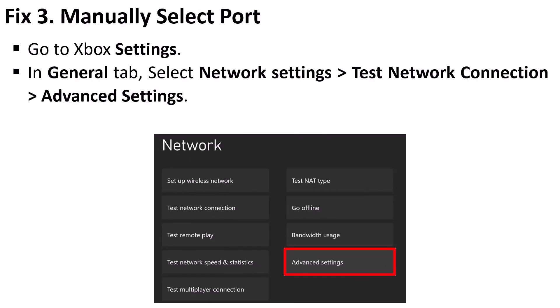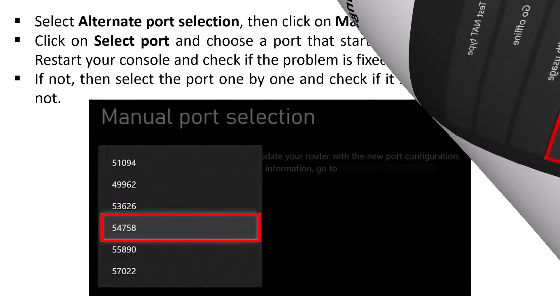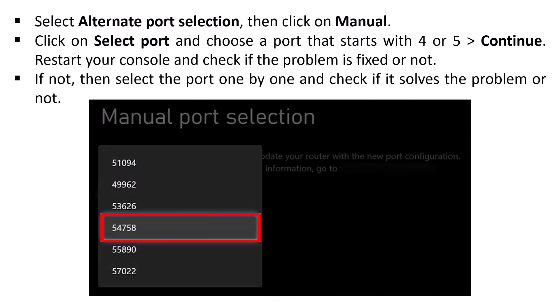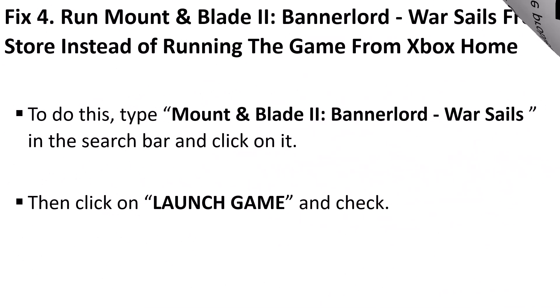Fix three: manually select port. Go to Xbox Settings, in General tap select Network Settings, Test Network Connection, Advanced Settings, select Alternate Port Selection, then click Manual. Click on Select Port and choose a port that starts with four or five, then continue. Restart your console and check if the problem is fixed. If not, select ports one by one to find which one works for you.